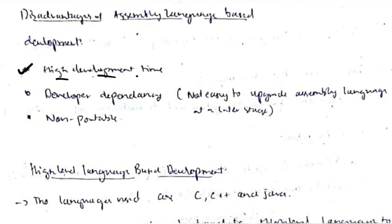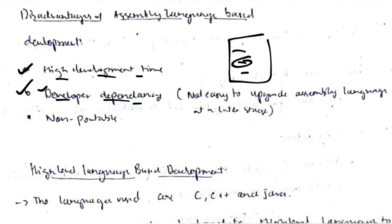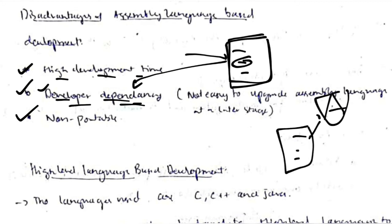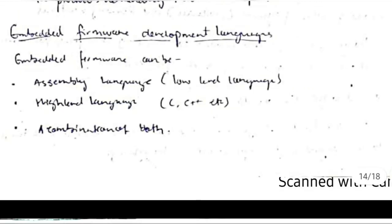Disadvantages of assembly language include high development time due to technical complexity, developer dependency (only the original developer knows why specific code was written, so errors can't easily be fixed by others), and non-portability (assembly code written for task A will produce errors if used for task B).